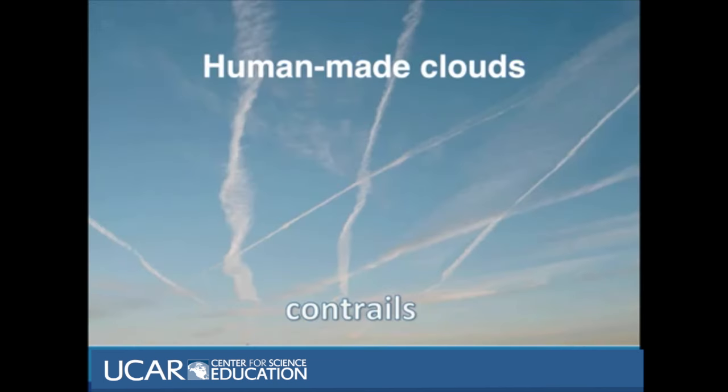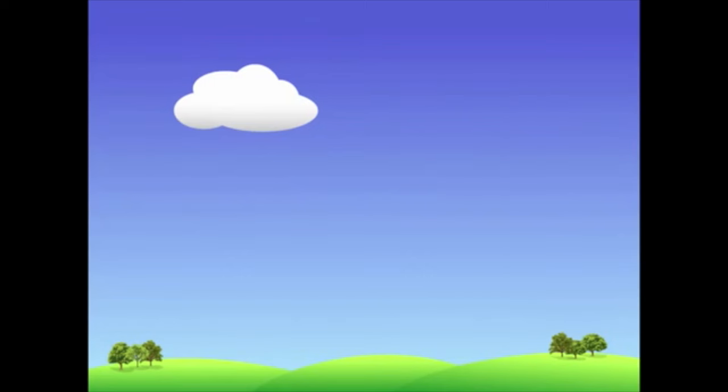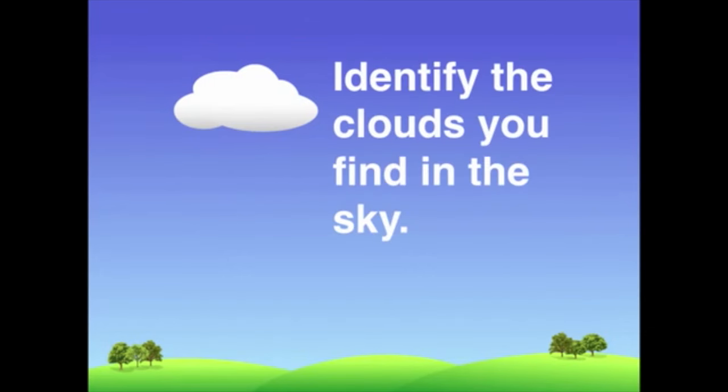There are also human-made clouds called contrails. These are clouds that form from water vapor released by airplanes. So head outside and identify the cloud types that you see in the sky.